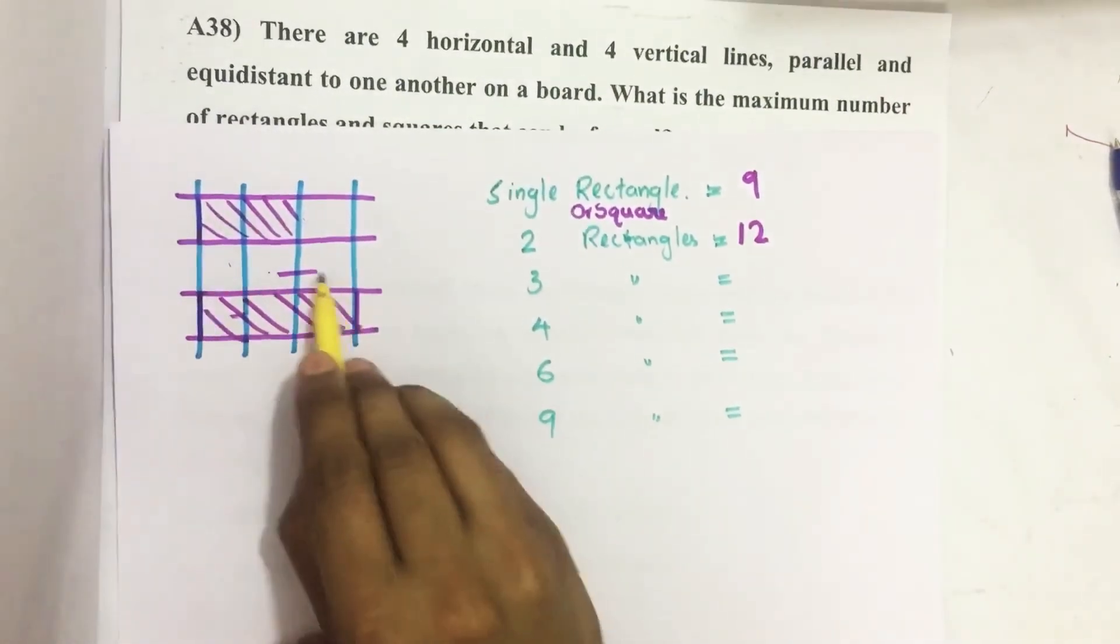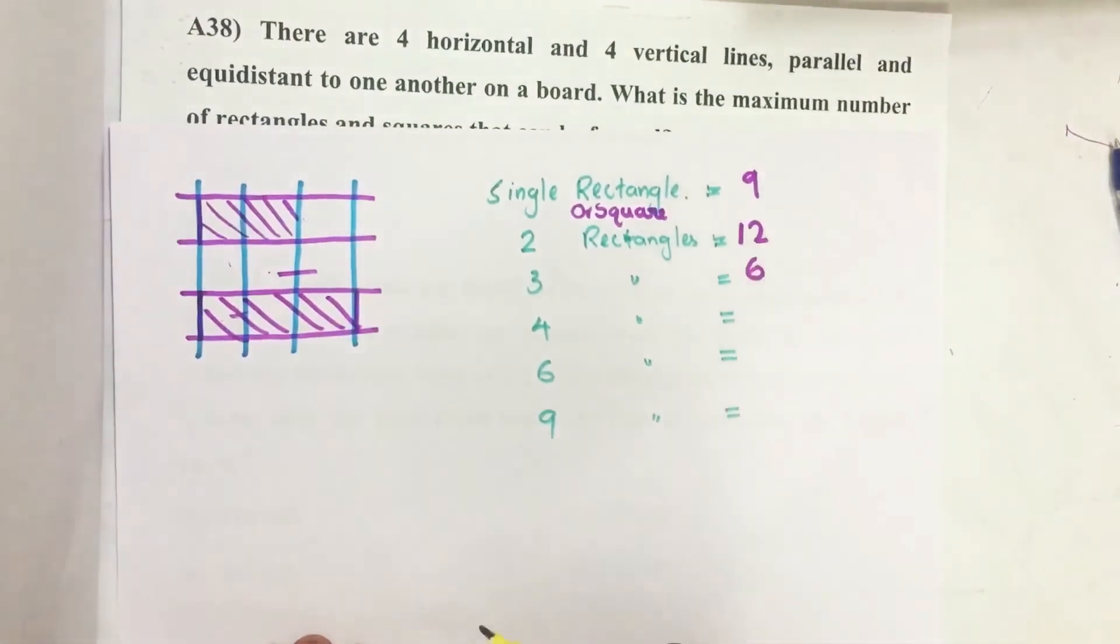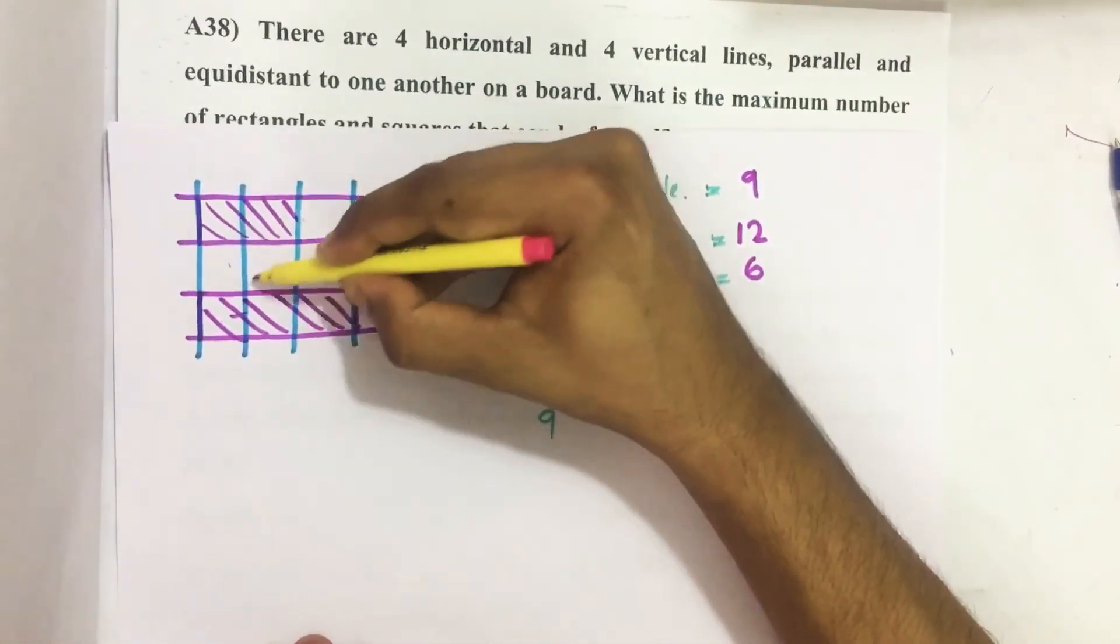One, two, three, four, five, six—total six such rectangles are there.